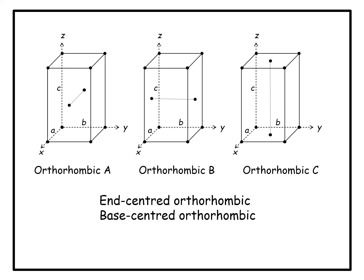Three examples are shown: orthorhombic A, orthorhombic B, and orthorhombic C. These designations come from which pair of faces are centered. The front and back faces in the unit cell are perpendicular to the x-axis — these are called the A-faces. Since in the first figure the A-faces are centered, it is orthorhombic A. Similar interpretation applies to orthorhombic B and orthorhombic C.